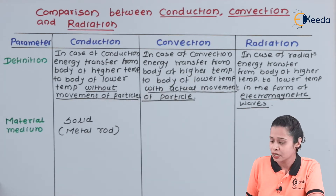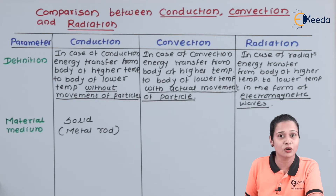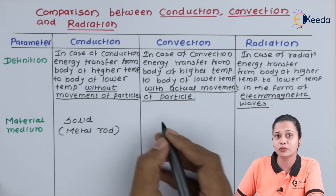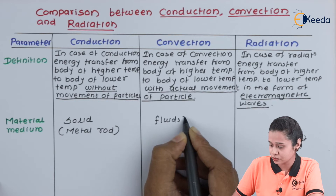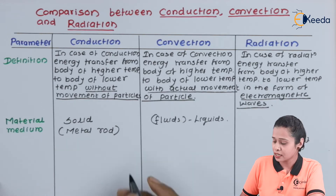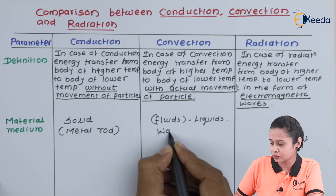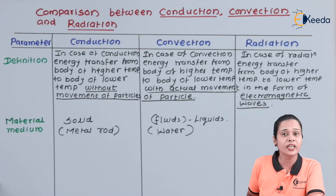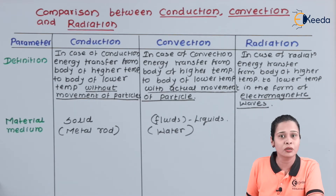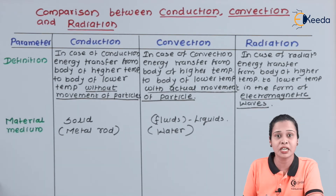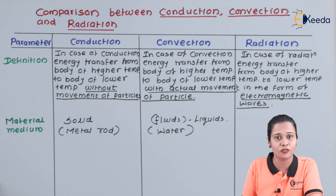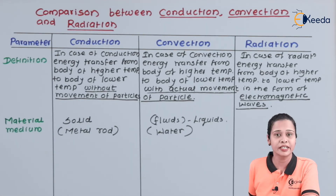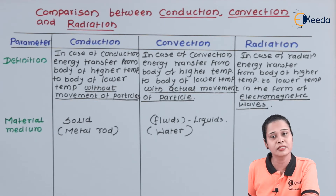In case of convection, there is actual movement of the particle, meaning this happens in the case of liquids or fluids. For example, heating of water. When we heat water, the water at the bottom of the beaker heats first. This water molecule moves up because it becomes lighter, and the upper molecules come down, creating a continuous motion of the particles. In case of radiation, no medium is required.